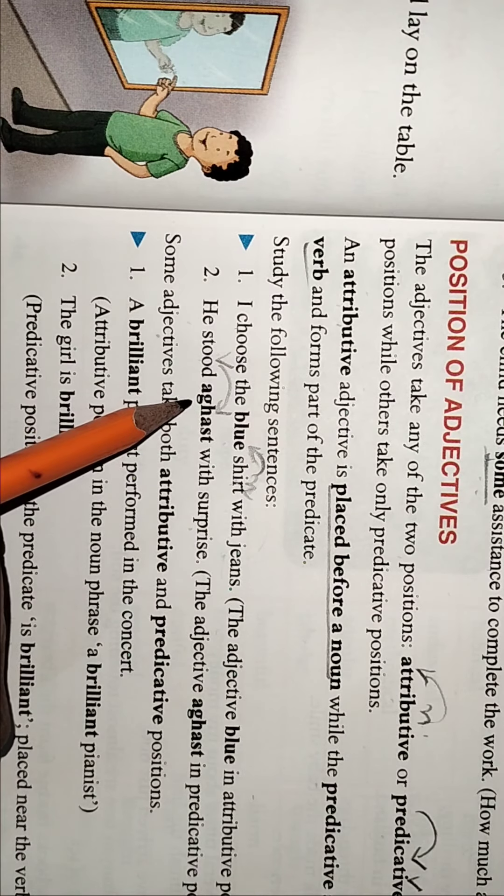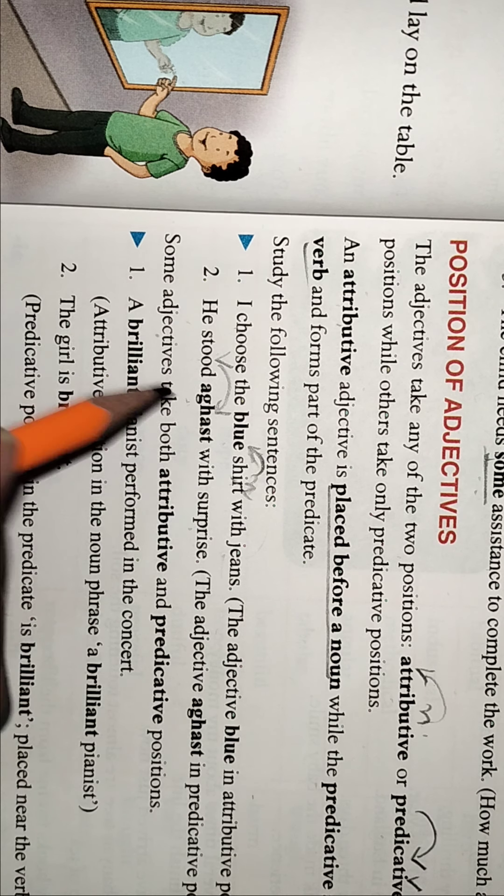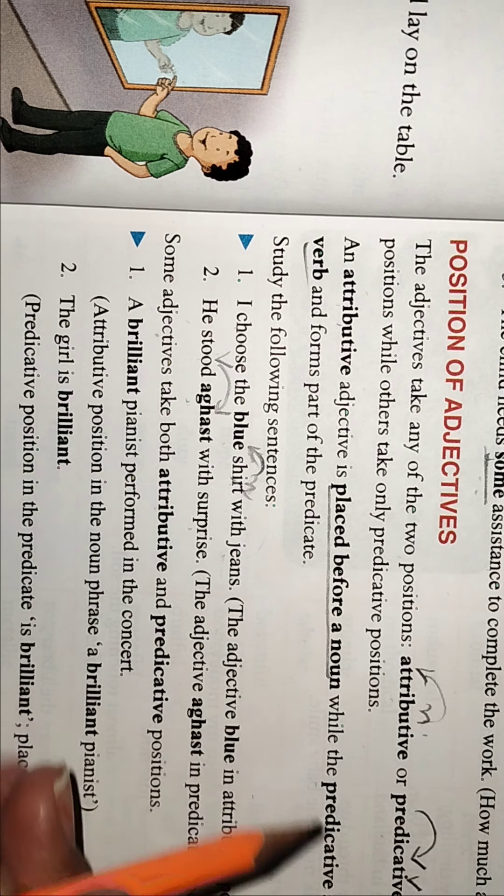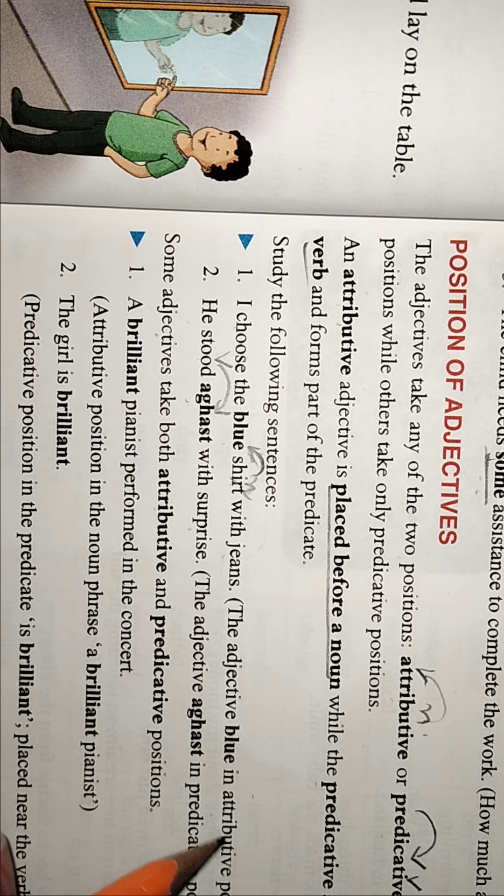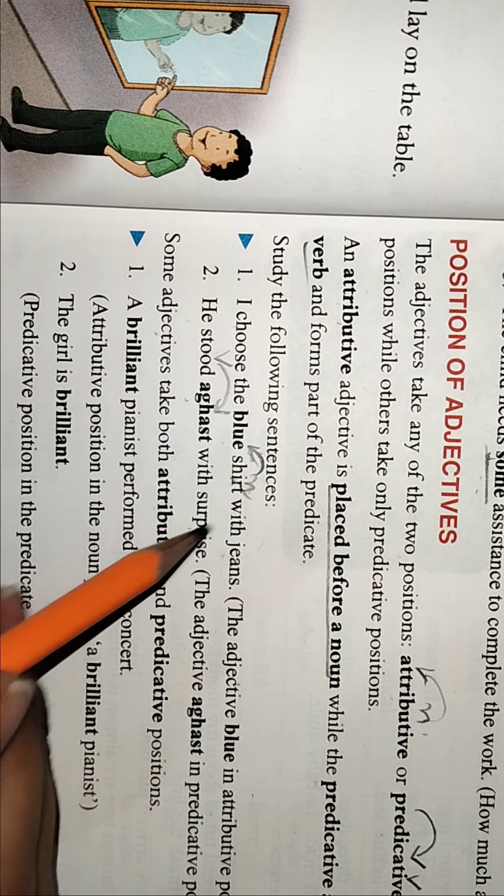So here it is predicative and here it is attributive. Some adjectives take both attributive and predicative. Now you have to remember this thing - attributives are placed before the noun and predicatives are placed after the verb.